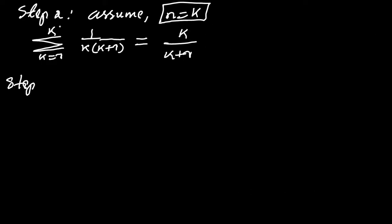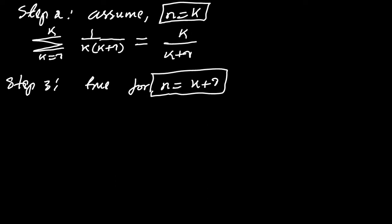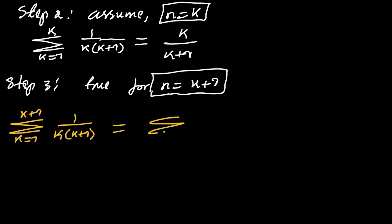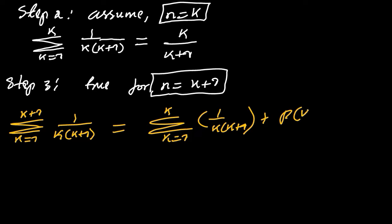Step two is the inductive hypothesis. For step three, we want to demonstrate that the inductive hypothesis is true for n equal to k plus one. We are summing from k equal to one to k plus one of one over k times k plus one. To sum the k plus one term, this equals the sum of the first k terms of one over k times k plus one, plus the k plus one term, which is p of k plus one.